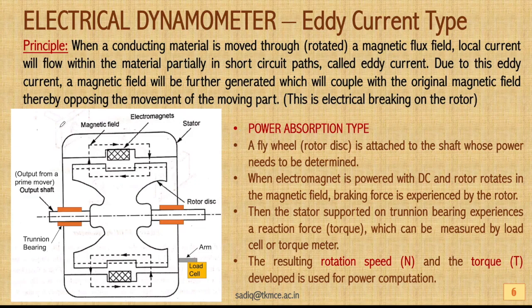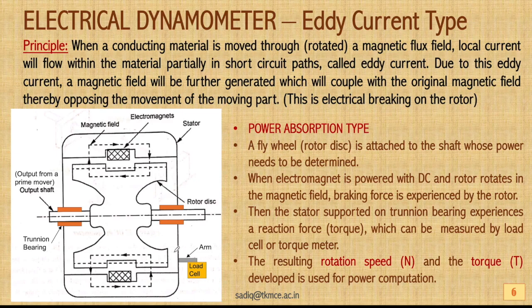In the eddy current dynamometer construction, there is an output shaft and a rotor disc with teeth, typically made of mild steel or copper. In the stator there are windings that act as electromagnets. The stator casing is supported on trunnion bearings. An arm connected to the casing is linked with a load cell, so any reaction developed in the casing is transferred to the load cell.